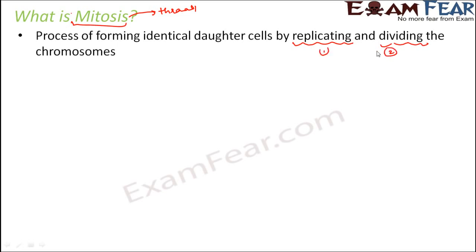Replication means the DNA will replicate — one set of DNA will form two sets of DNA. Then it will divide, giving one set of DNA to one daughter cell and the second set to the second daughter cell. Simple funda: replicate the DNA and then divide it amongst the daughter cells.